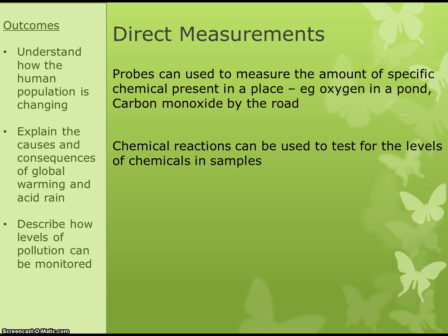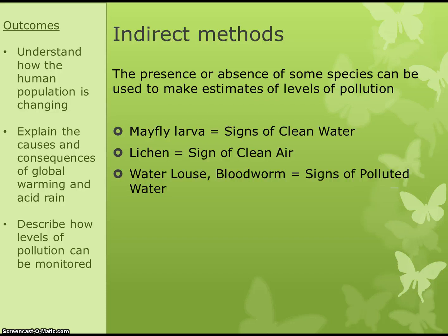There are two ways of measuring pollution. Direct measurements use probes — for example, an oxygen sensor to measure how much oxygen there is in a certain place, or to measure carbon monoxide levels. Instead of probes we can also do chemical reactions: take a water sample, perform a chemical reaction, and determine how much of a specific chemical is present. The other way is indirect methods using indicator species — the presence or absence of certain organisms tells us about pollution levels. For instance, mayfly larvae only appear when water is clean, lichen only appears when air is clean, but species like water louse or bloodworm exist in heavily polluted water. Counting these specific species tells us about the state of the environment.